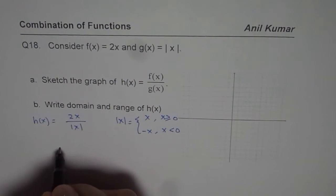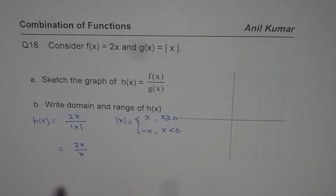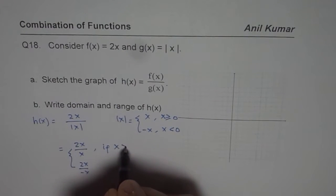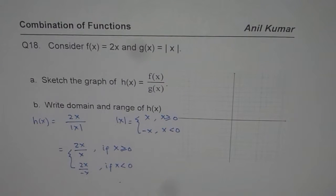Therefore we could write h of x as 2x over x, or 2x over minus x, if x is greater than or equal to 0 and if x is less than 0. So that is how h of x is going to be.